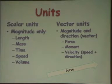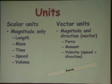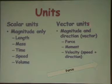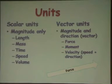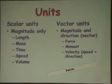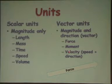We have two forms of units: scalar units and vector units. Scalar units only have magnitude — length, mass, time, speed, volume — but no direction. Vector units, which represent most of our units, have both magnitude and direction, such as forces, moments, and velocity. The difference between velocity and speed is that velocity means speed plus direction.